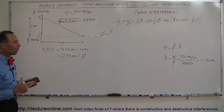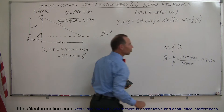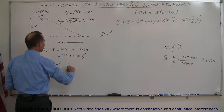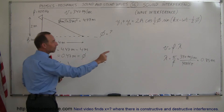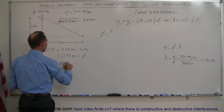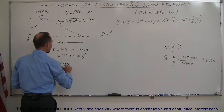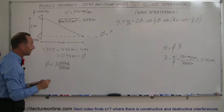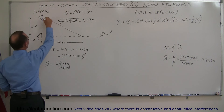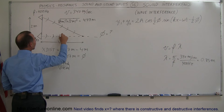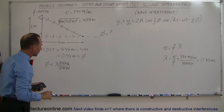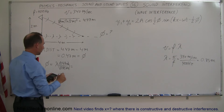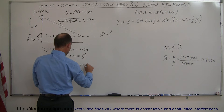Now, how much is that in terms of wavelengths? We know the wavelength is 0.85 meters, so what fraction of a wavelength is 0.47 meters? Phi equals the extra distance divided by the wavelength: 0.47 divided by 0.85. That gives us 0.553 wavelengths — the fraction of a wavelength that one wave travels farther than the other before they meet.